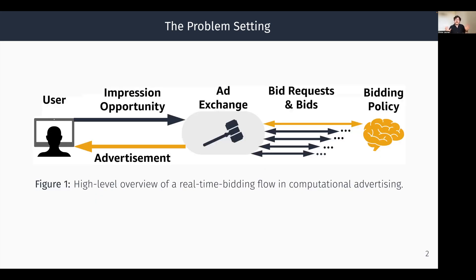I have a figure to help illustrate the high-level flow. A user on the left is browsing some websites and an impression opportunity arises. This opportunity is sent to the ad exchange, who sends bid requests to all possible bidders. We are one of those bidders, where we have a bidding policy that decides the bid we want to place, and if we win the auction, we get to show our ad.